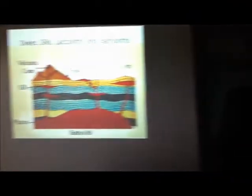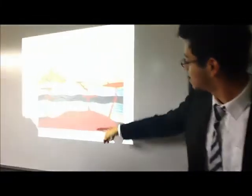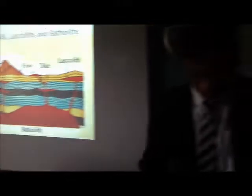Moving on to lacoliths and batholiths. Lacoliths form when viscous magma forces overlying rock to arch into a dome. Batholiths are much larger than the previous features and often provide the magma for dikes, sills and lacoliths. Surrounding the batholith, extreme heat and pressure alters adjacent rock in a process called metamorphism, forming a metamorphic aureole.